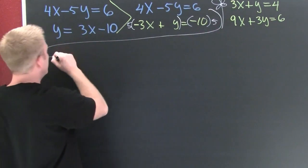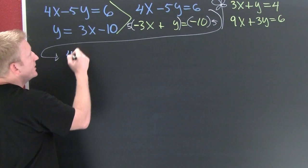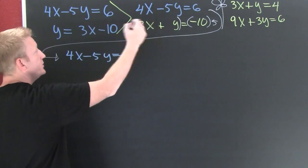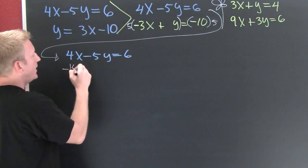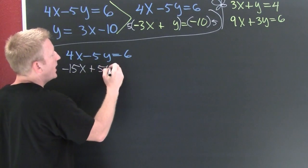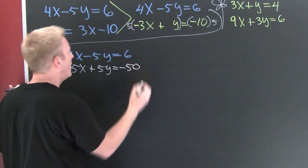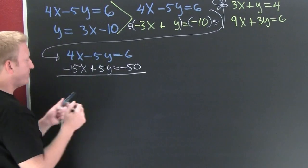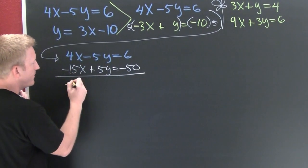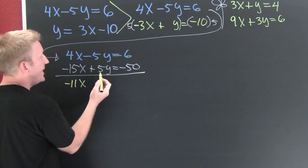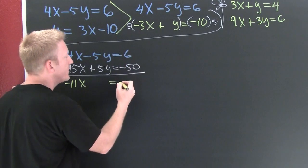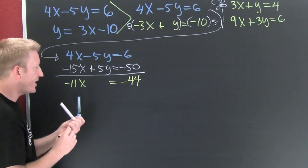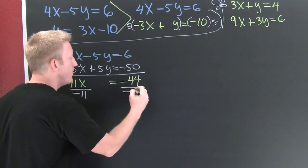Taking the system down: the top one is still 4x minus 5y is equal to 6. Then the bottom becomes negative 15x plus 5y is negative 50. These numbers are big, but now it's time to add them — because we have additive inverses. Adding straight down: that's negative 11x. The y's cancel — that's the desired effect — giving us negative 44. So we divide both sides by negative 11.